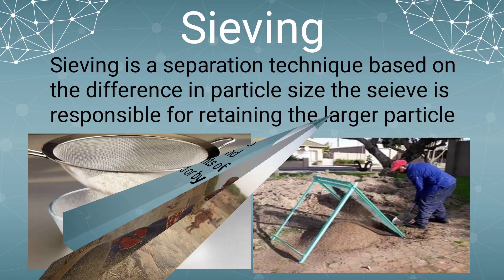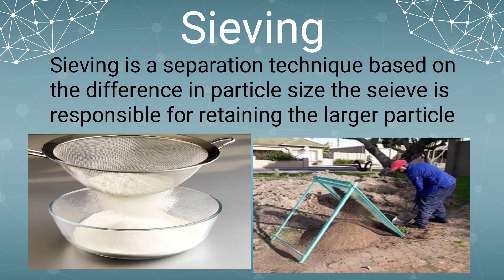Now let us see sieving. What does your mother do before preparing a sweet with flour? She uses a sieve to separate impurities or unwanted things. When she sieves, the bigger particles remain in the sieve. This process is called sieving. We can also use this process at construction sites to separate pebbles and stones from the sand.